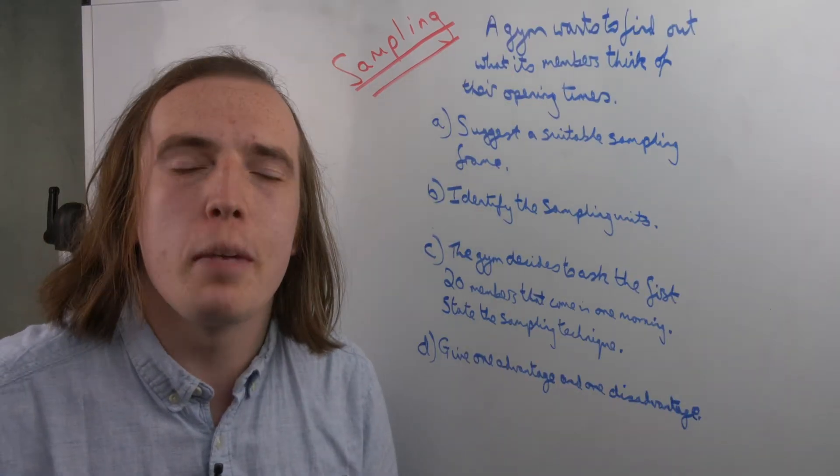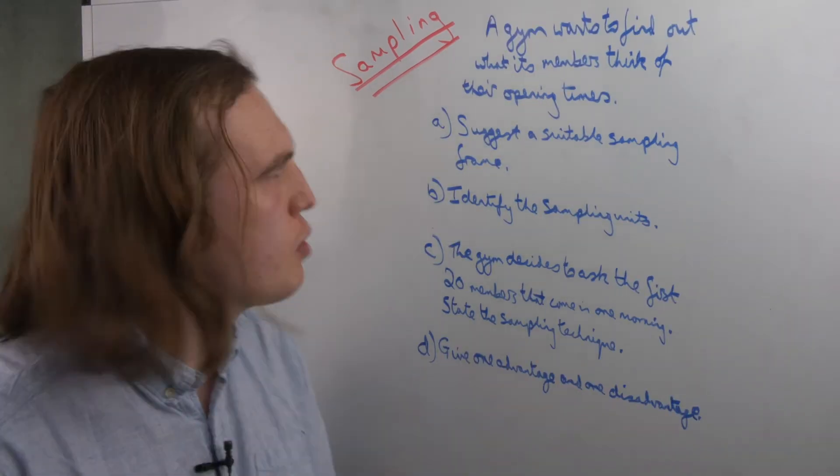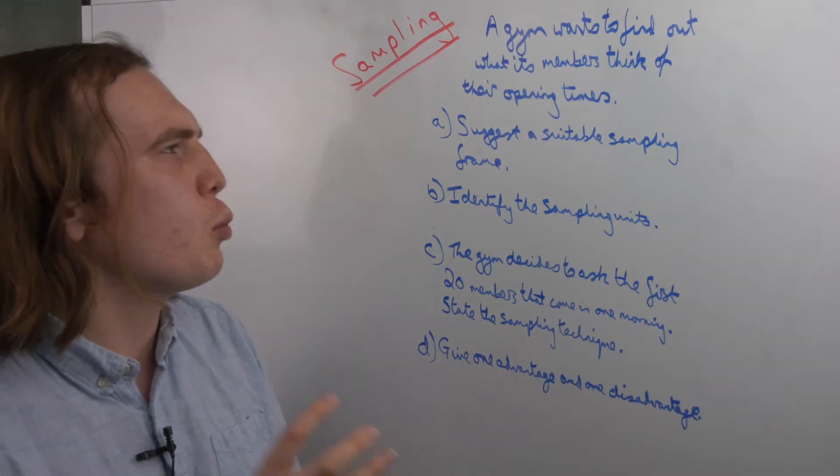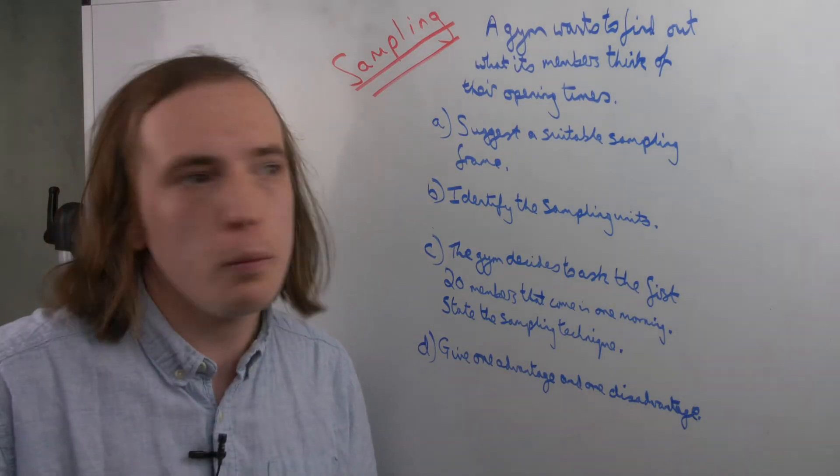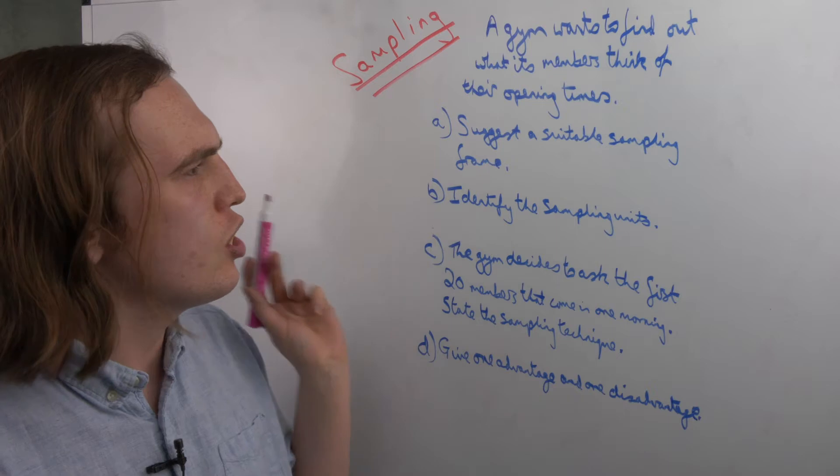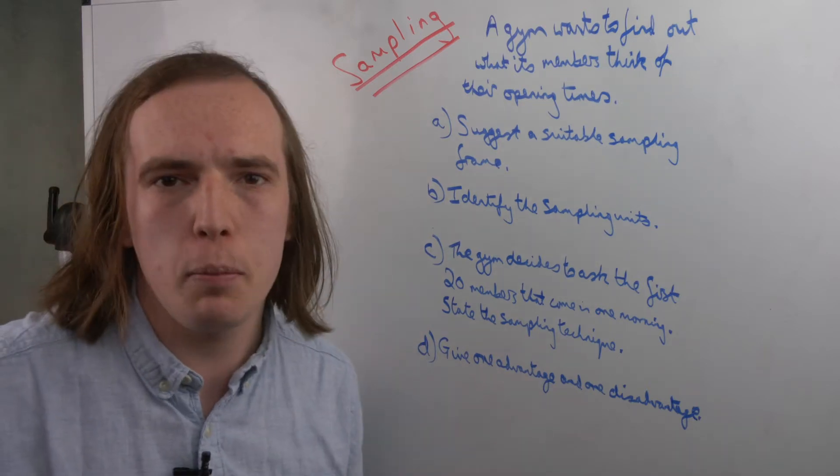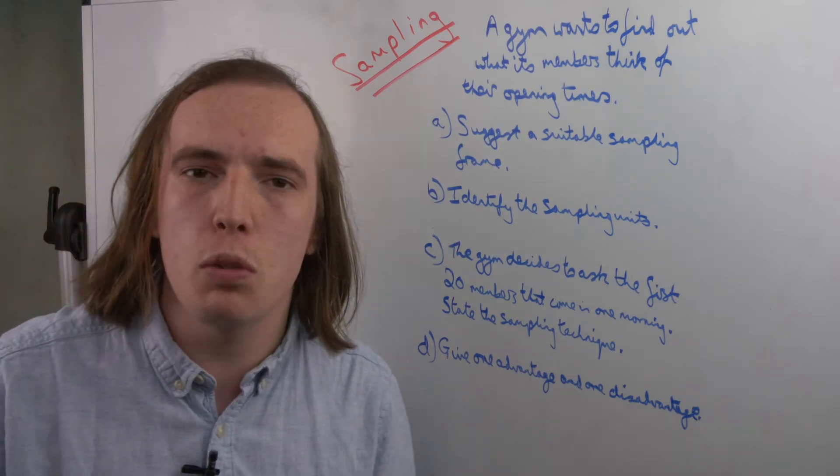Another style of question you may just find, though, is something like this. A gym wants to find out what its members think of their opening times. So for A, suggest a suitable sampling frame. Now this is another phrase we just want to understand. When we say a sampling frame, it's that we're not just going to ask everyone—how are we focusing our attentions?